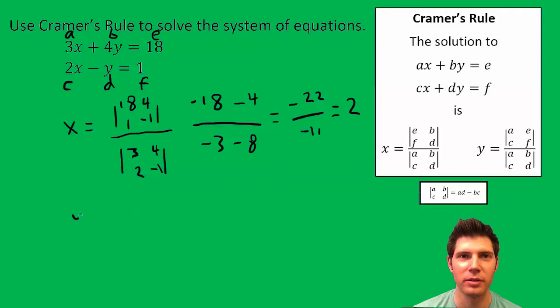So let's do the same thing for Y. Stacked determinants. So Y says A, C is going to be the first column for both. So it's going to be 3, 2, 3, 2. And then we have an E, F, which is 18, 1.